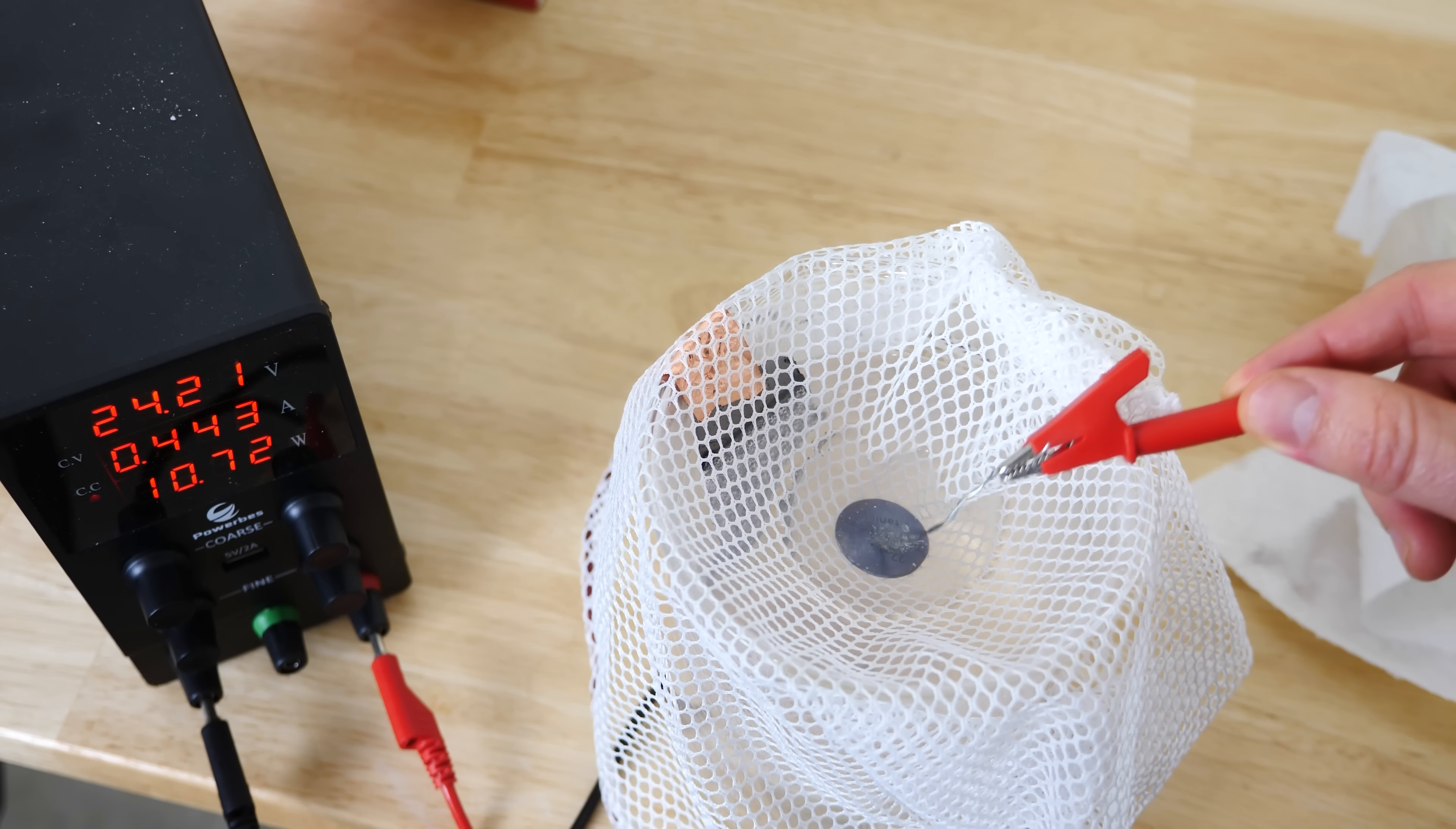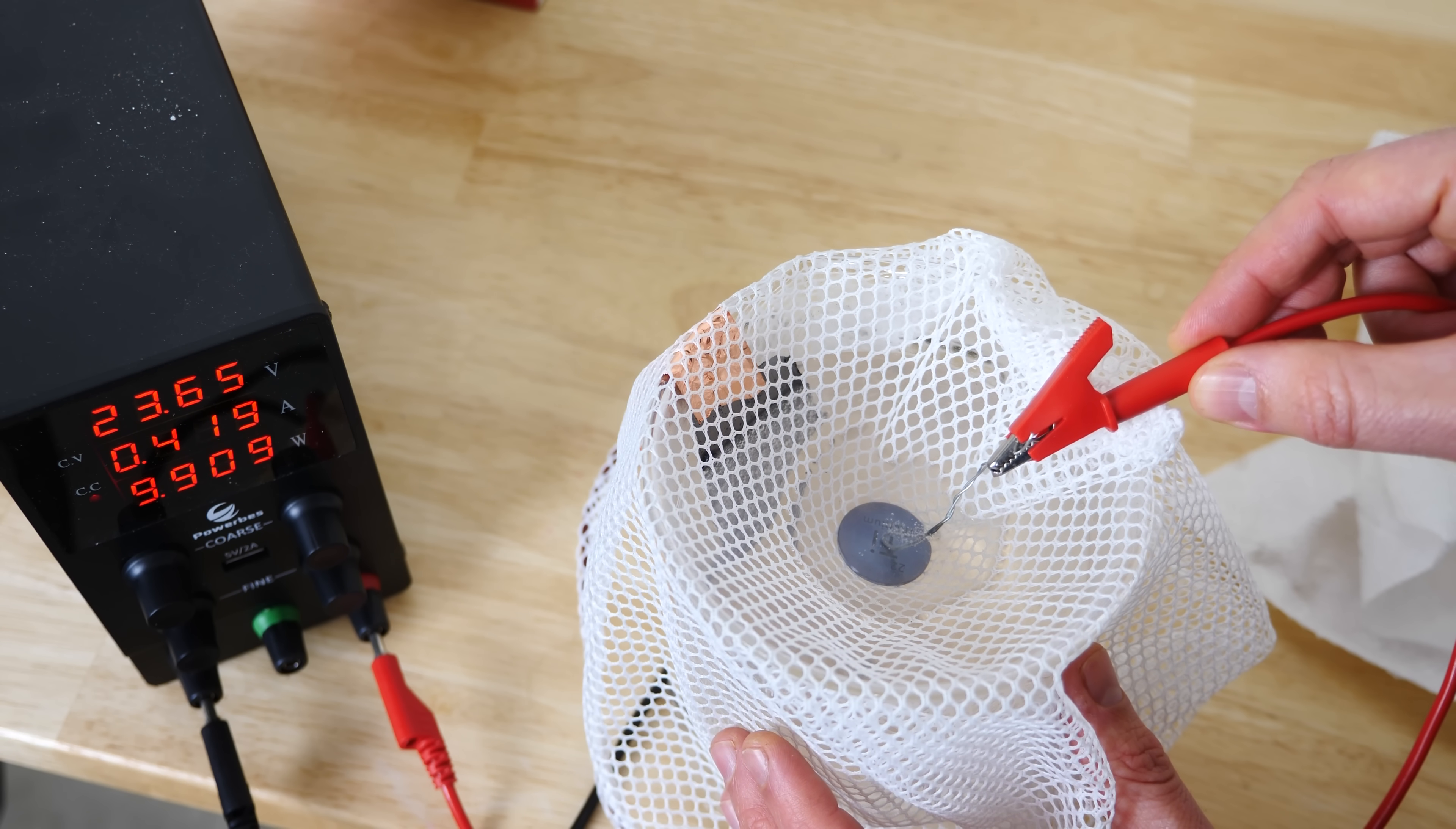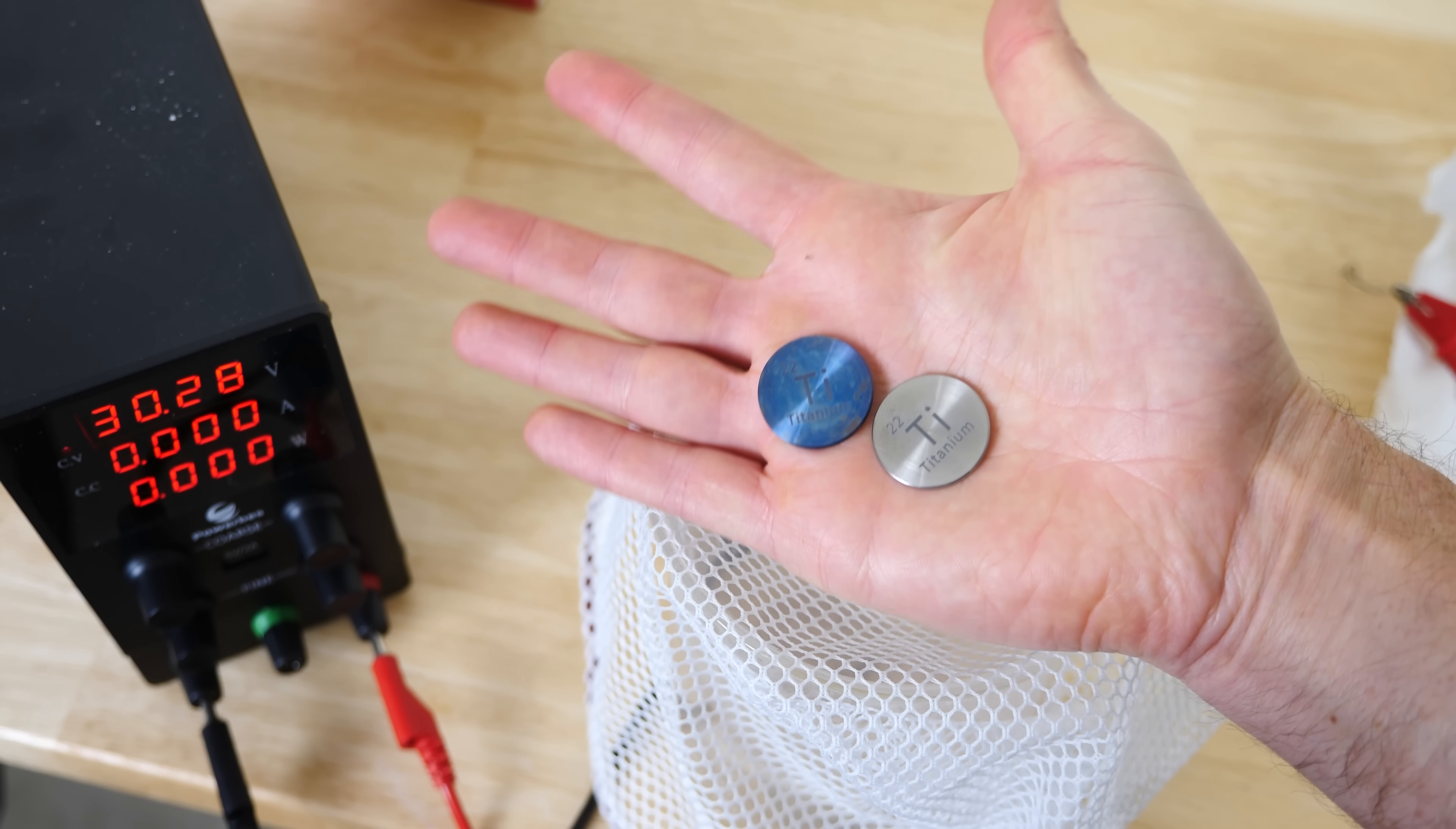One way to control the thickness of that titanium dioxide is by the voltage that we put on our electrode. The higher the voltage, the thicker the titanium dioxide layer we can get. So at this point, when the titanium looks bluish, that means that it's absorbing the red light and the green light. It's not reflecting it anymore.